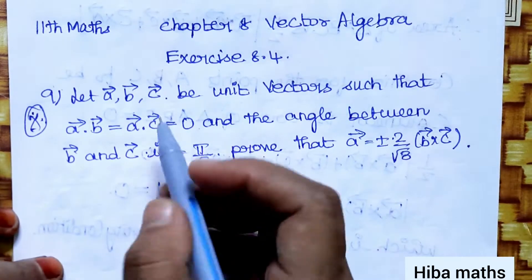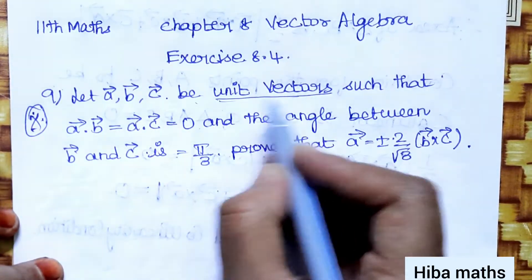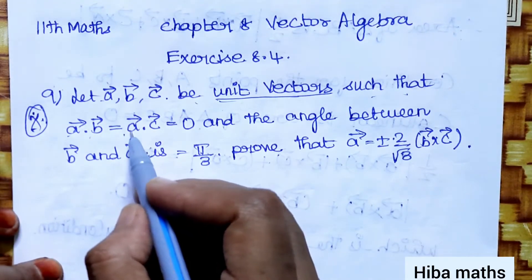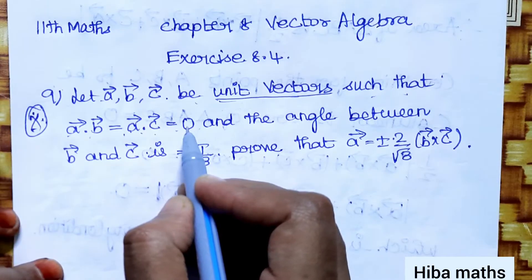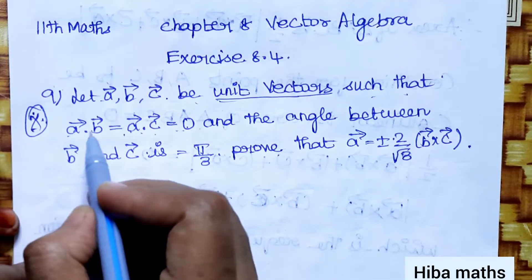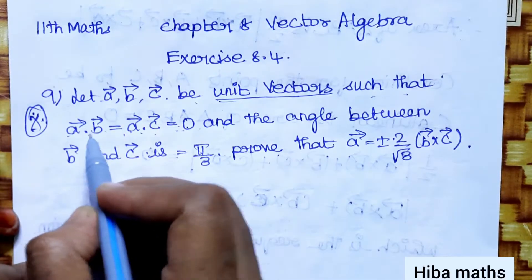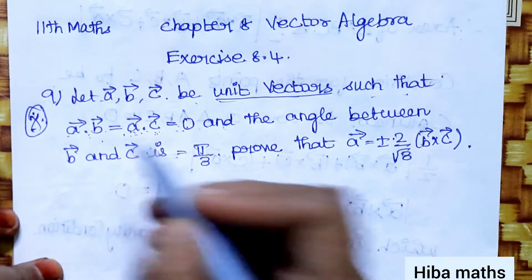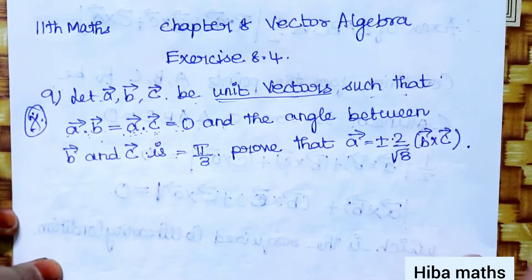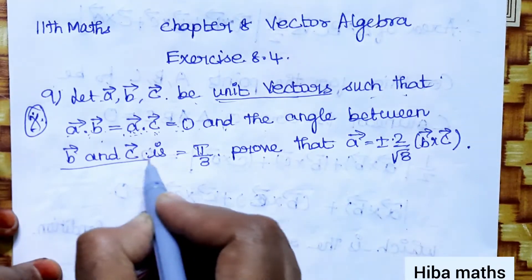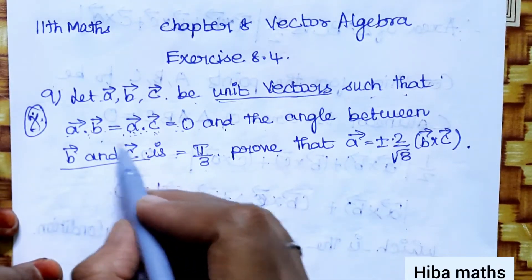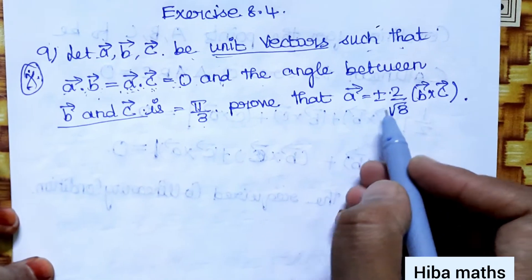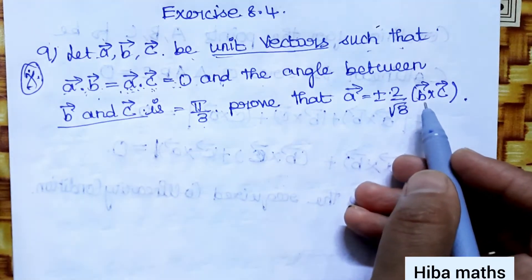Let A vector, B vector, C vector be unit vectors, so their magnitudes are equal to 1, such that A·B = 0 and A·C = 0. This means A is perpendicular to B, and A is perpendicular to C. The angle between B and C is π/3. We need to prove that A vector is equal to plus or minus 2 by root 3 into B vector cross C vector.